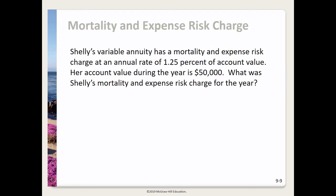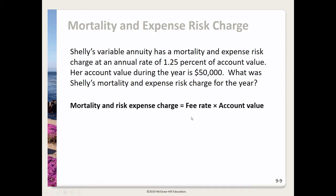For mortality and expense risk charge, Shelly's variable annuity has a charge at an annual rate of 1.25% of account value. Her account value during the year is $50,000. Taking the fee rate times the account value: 1.25% × $50,000 gives a mortality and expense risk charge of $625.